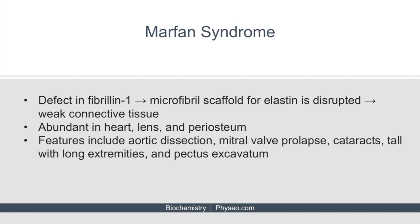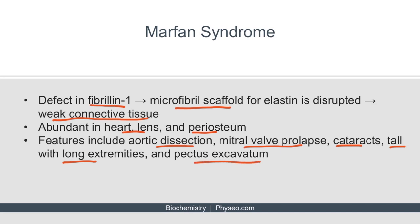Marfan syndrome is a genetic disorder resulting from a defect in fibrillin 1. Because fibrillin 1 is a component of the microfibril scaffold, this can impair elastin synthesis and result in weak connective tissue. Fibrillin 1 is particularly abundant in the heart, the lens, and the periosteum. Features include aortic dissection, mitral valve prolapse, cataracts, tall stature with long extremities, and pectus excavatum.